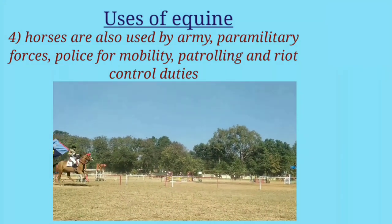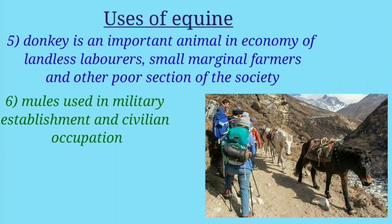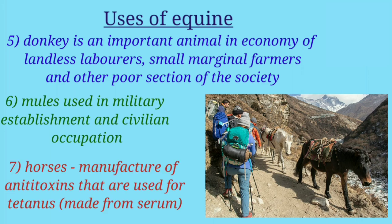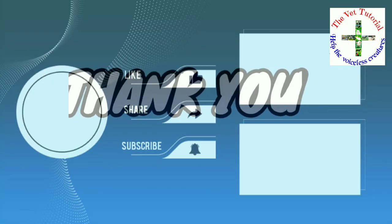Donkeys are an important animal in the economy of landless laborers, small and marginal farmers, and other poorer sections of society, both in rural and urban areas. Mules have been used both in military establishments and civil line occupations. Horses are also used as a source for the manufacture of anti-toxins, such as tetanus antitoxin, made from horse serum. This ends today's video — stay safe and see you in the next video.